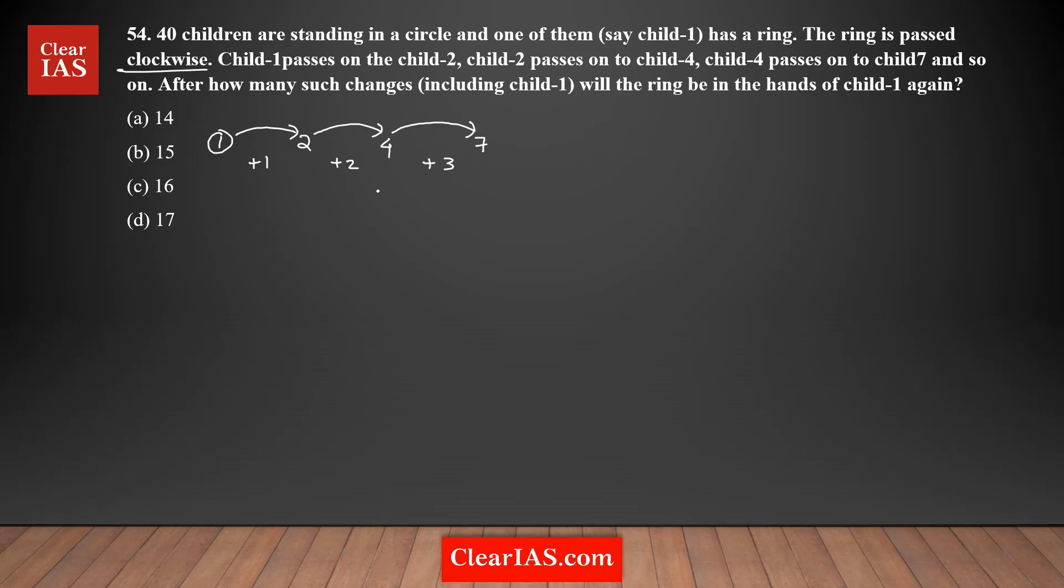The question is asking you to calculate after how many such changes, including child one, will the ring be in the hands of child one. Initially you start with child one. I need to find after how many changes the ring will be back to child one. This is the first change.